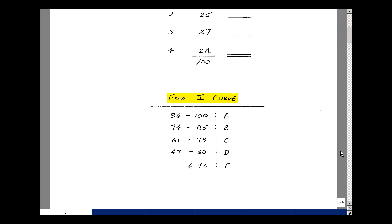With weights varying from 24 to 27 points. This is an actual exam that I gave when I taught the course recently, and based on the average test score and the standard deviation, I came up with the following curve. From 86 to 100 was an A, 74 to 85 a B, 61 to 73 a C, 47 to 60 a D, and less than or equal to 46 points was not passing.